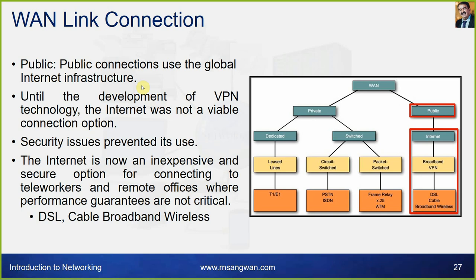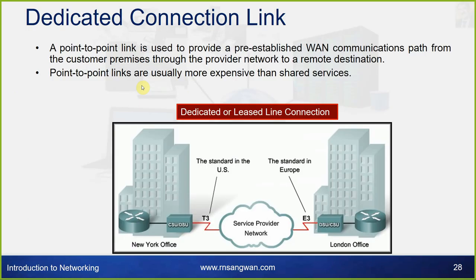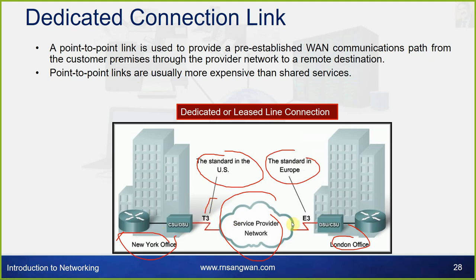The internet is now an inexpensive and secure option for connecting teleworkers and remote offices where performance guarantees are not critical, using DSL, cable broadband, and wireless. A dedicated point-to-point link provides a pre-established WAN communication path from the customer premises through the provider network to a remote destination; for example, connecting a New York office to a London office using T3/E3 standards, with the service provider guaranteeing connectivity between the two endpoints.